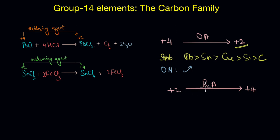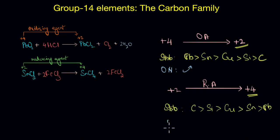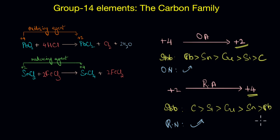On the other hand, the reducing nature of the group 14 elements depends on the stability of the plus 4 oxidation state. The stability of the plus 4 oxidation state decreases down the group, so the reducing nature follows the same order — carbon has the maximum tendency to go from plus 2 to plus 4 oxidation state, whereas lead has the least tendency to move to the plus 4 oxidation state.